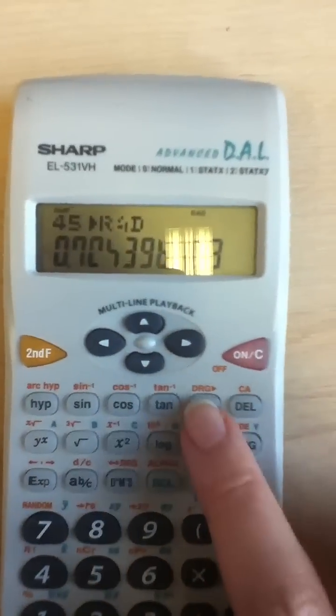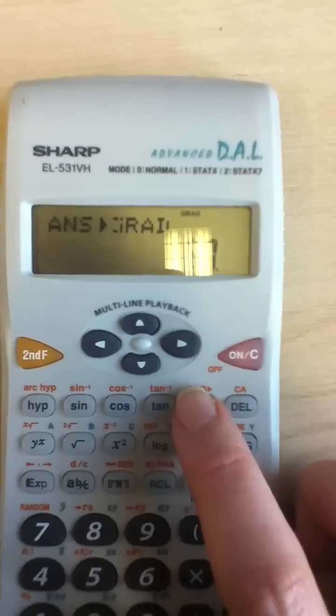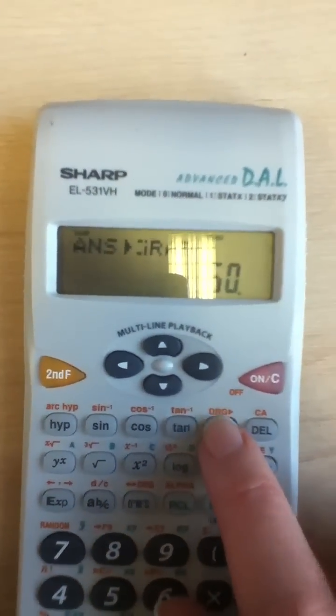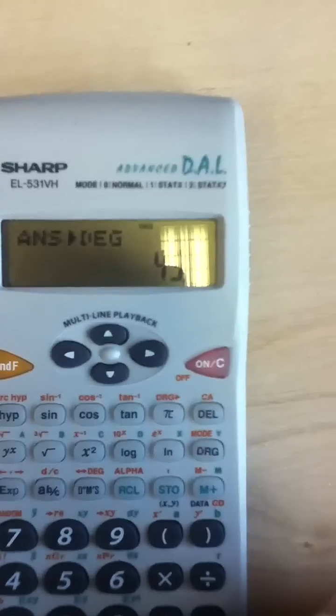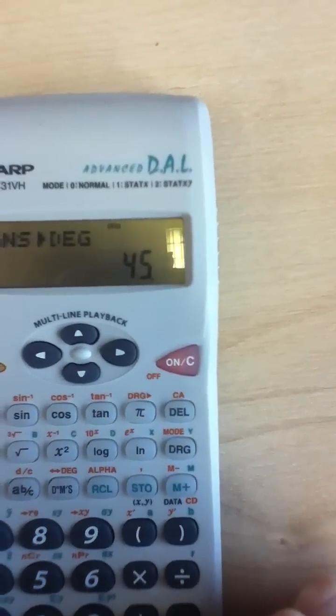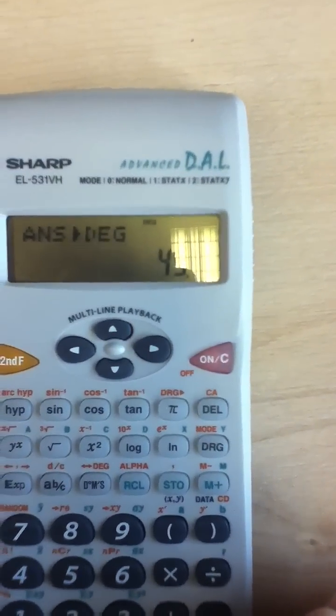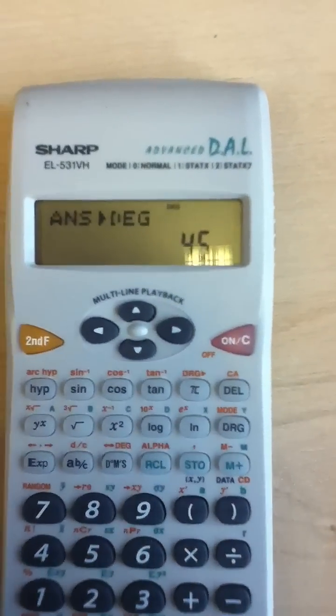If you keep pressing second function and that cycle button, it will take you first to gradient, which we're not interested in. If you press it one more time, it will take you back to degrees, which brings us back to 45 degrees, which is what we started with. So that's how you do it. Thank you.